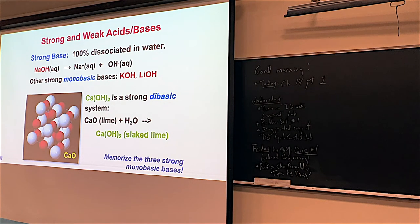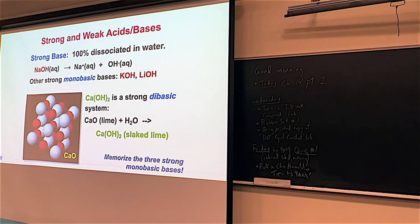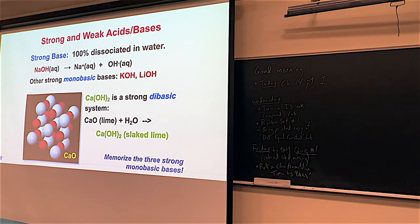Monobasic just means one hydroxide — NaOH, KOH, and LiOH each give one OH⁻. Calcium hydroxide is considered a dibasic system, meaning two hydroxides. Calcium hydroxide is a strong base but not used quite as often; it's sometimes called slaked lime, and it comes from calcium oxide, which is lime. The important part for now is the three strong bases I want you to know: KOH, LiOH, and NaOH. All of these are strong and we use the single arrow, not the equilibrium arrow.